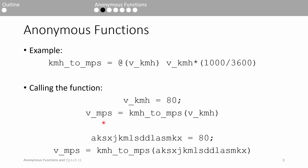Just like any other function, the name of the input variable we give doesn't have to match the argument's name in the anonymous function declaration. We can call the kmh to mps function using this monstrosity of a variable name. When we do so, it'll work just fine.